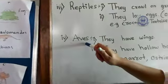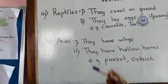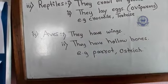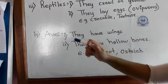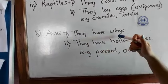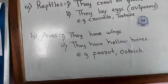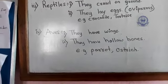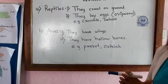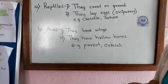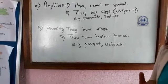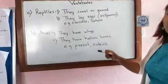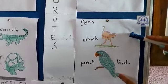The fourth class is Aves — birds. The first characteristic is they have wings. The second characteristic is they have hollow bones, meaning their bones are empty inside, which makes them light so they can easily fly in the air. Examples are parrot and ostrich.